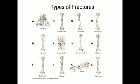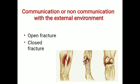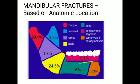This is a diagrammatic presentation of the types of fractures from A to L, which includes avulsion, comminuted, displaced, greenstick fractures (mostly seen in children), impacted, interarticular, longitudinal, oblique, pathologic, spiral, stress, and transverse. Regarding communication or non-communication with external environment, fractures include open fractures and closed fractures.